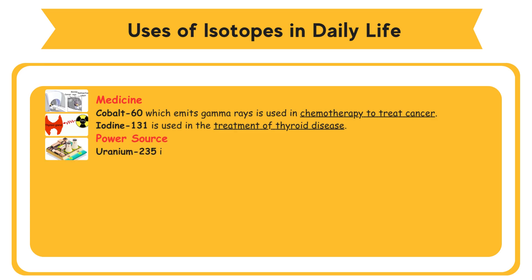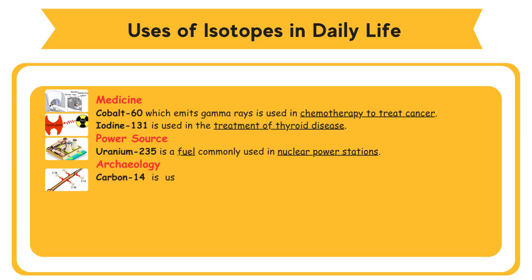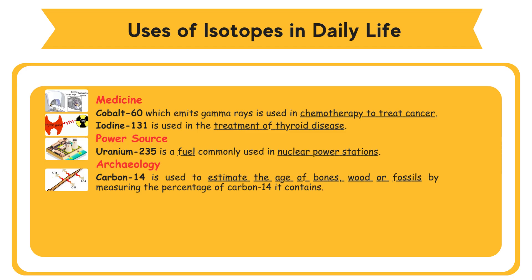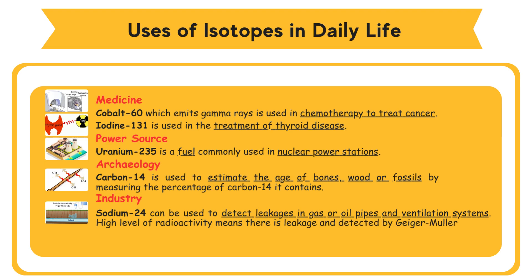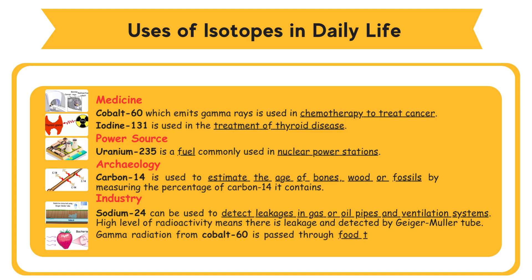As a power source, uranium-235 is a fuel commonly used in nuclear power stations. In archaeology, carbon-14 is used to estimate the age of bones, wood, or fossils by measuring the percentage of carbon-14 present. In industry, sodium-24 can detect leakages in gas or oil pipes and ventilation systems — a high level of radioactivity detected by a Geiger-Müller tube indicates leakage. Gamma radiation from cobalt-60 is also used to destroy bacteria in food preservation.